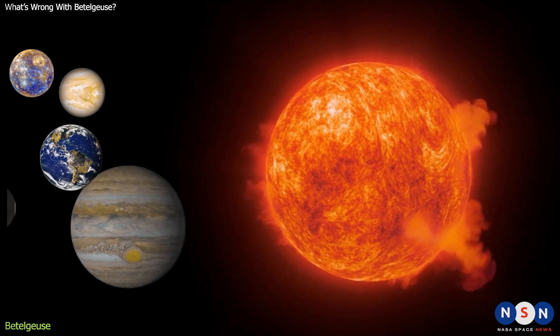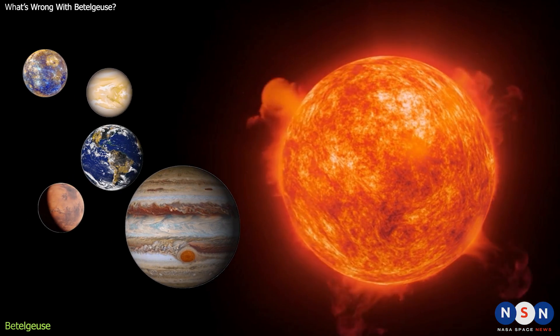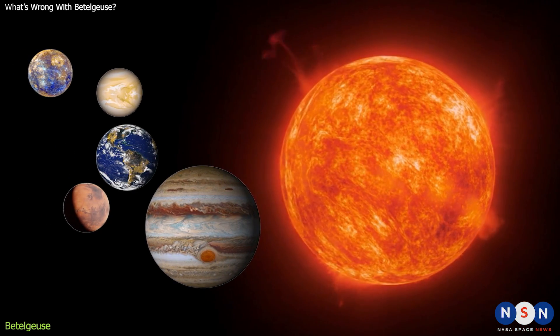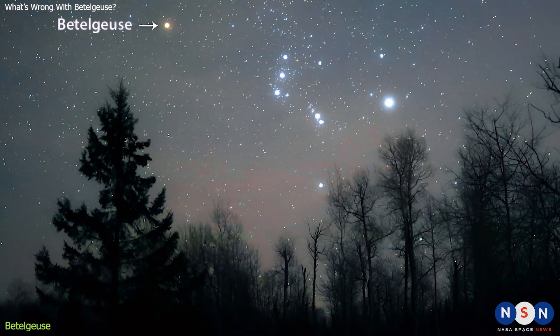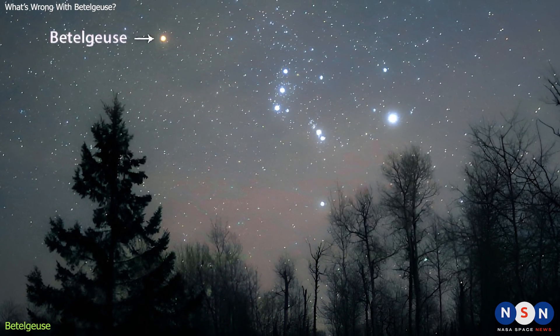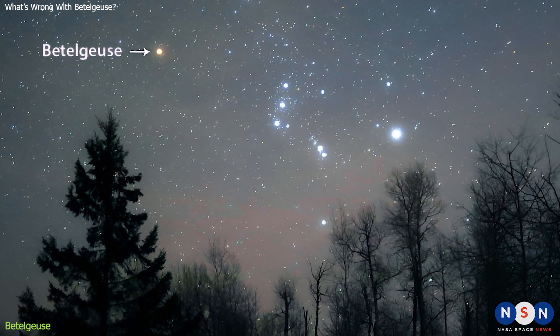It's so big that if you replace the sun with Betelgeuse, it would engulf Mercury, Venus, Earth, Mars, and even Jupiter. It's so bright that it can be seen with the naked eye from over 700 light years away.